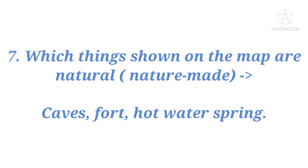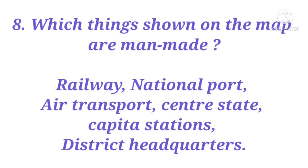Question 7: Which things shown on the map are natural (nature-made)? Answer: Caves, forts, and hot water springs. Question 8: Which things shown on the map are man-made? Answer: Railway, national port, airport, center state, capital stations, and district headquarters.